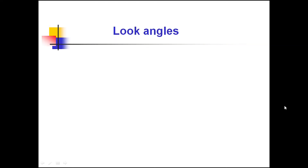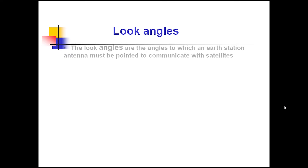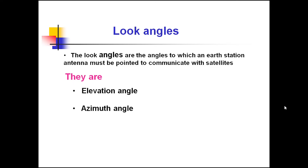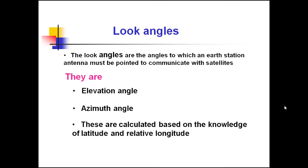Now let us look at look angles related to satellites. Look angles are the angles to which an Earth station antenna must be pointed to communicate with satellites. There are two types of look angles: elevation angle and azimuth angle. These are calculated based on the knowledge of latitude and relative longitude.